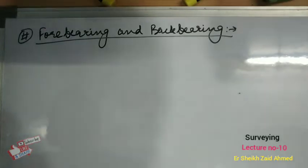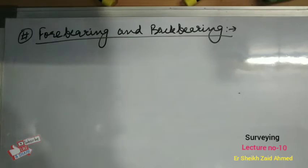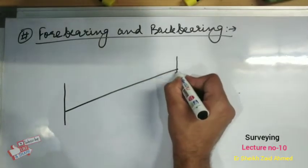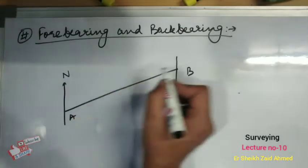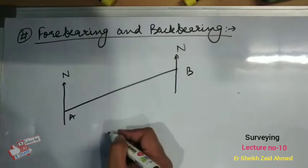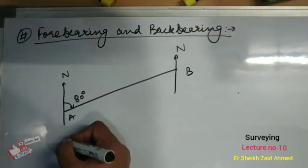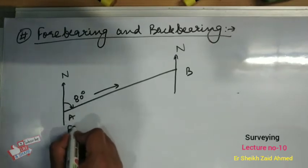Any straight line has two diametrically opposite directions depending upon the direction of the arrow. The bearing of the line in the direction of the progress of a survey is called forebearing. The bearing of the line in the direction opposite to the direction of progress of survey is called backbearing. For example, for line AB, if this angle is 80 degrees with respect to north at point A in the direction of progress of the survey, then this 80 degrees will be called the forebearing, represented as FB.